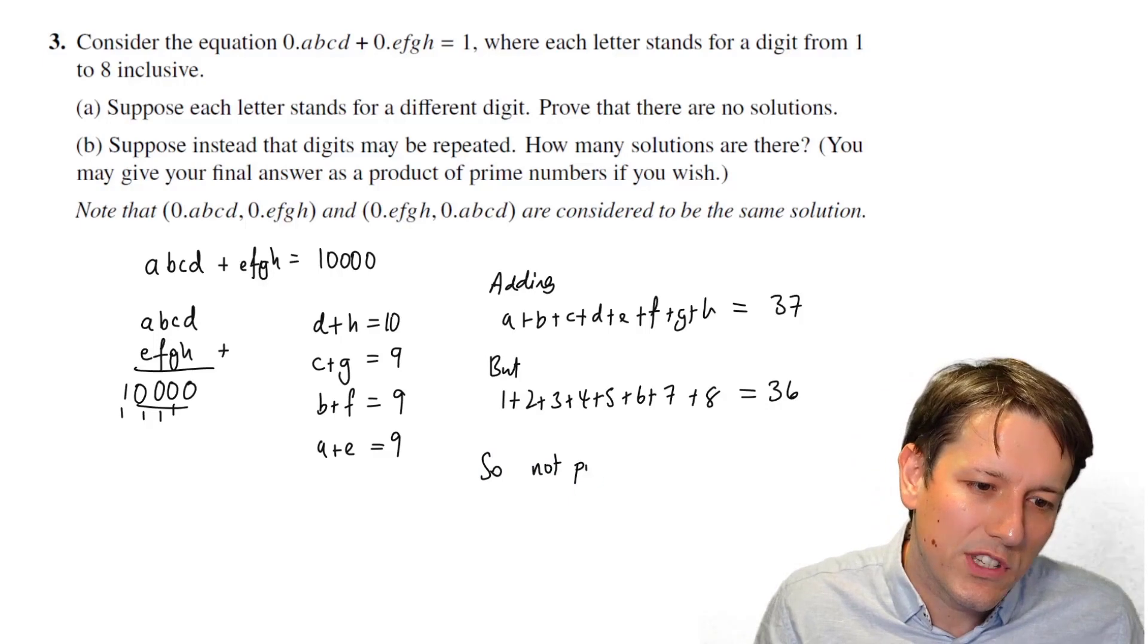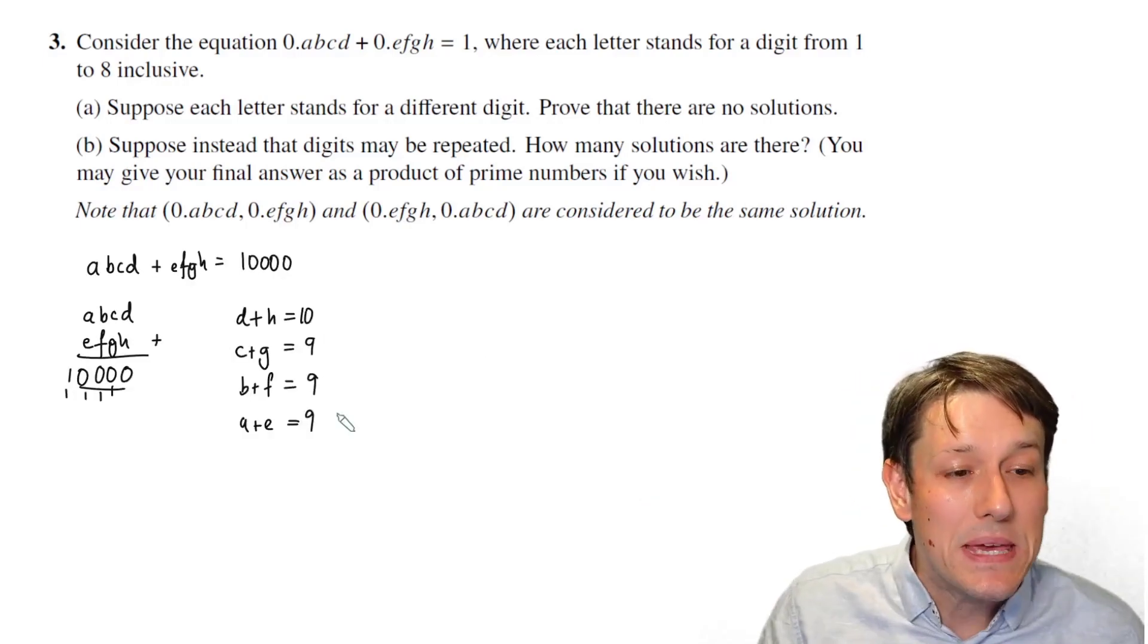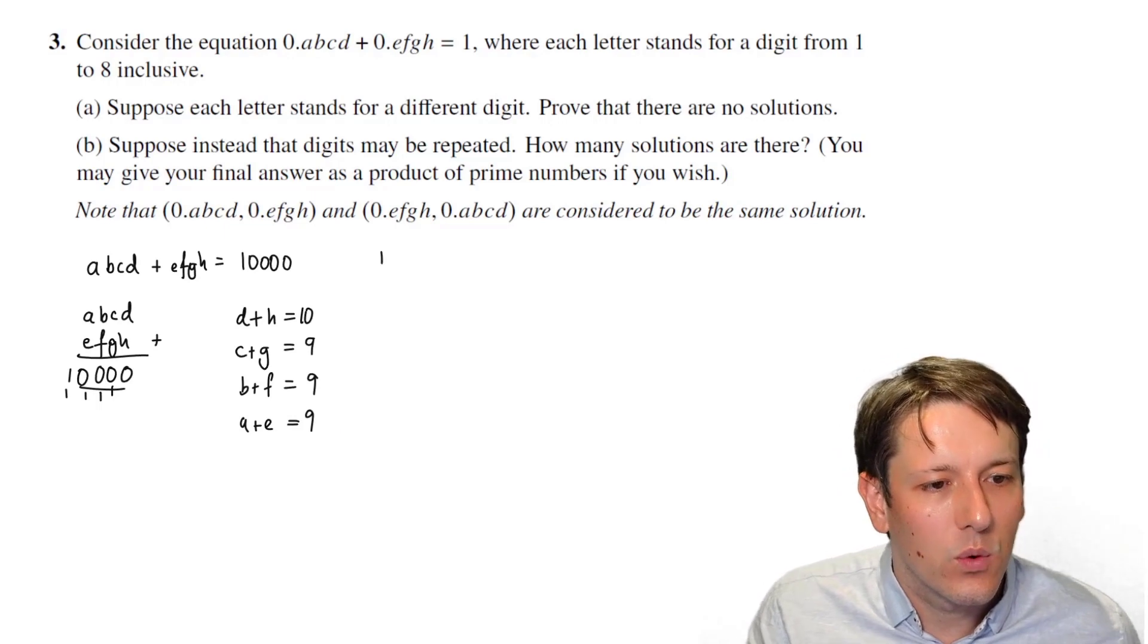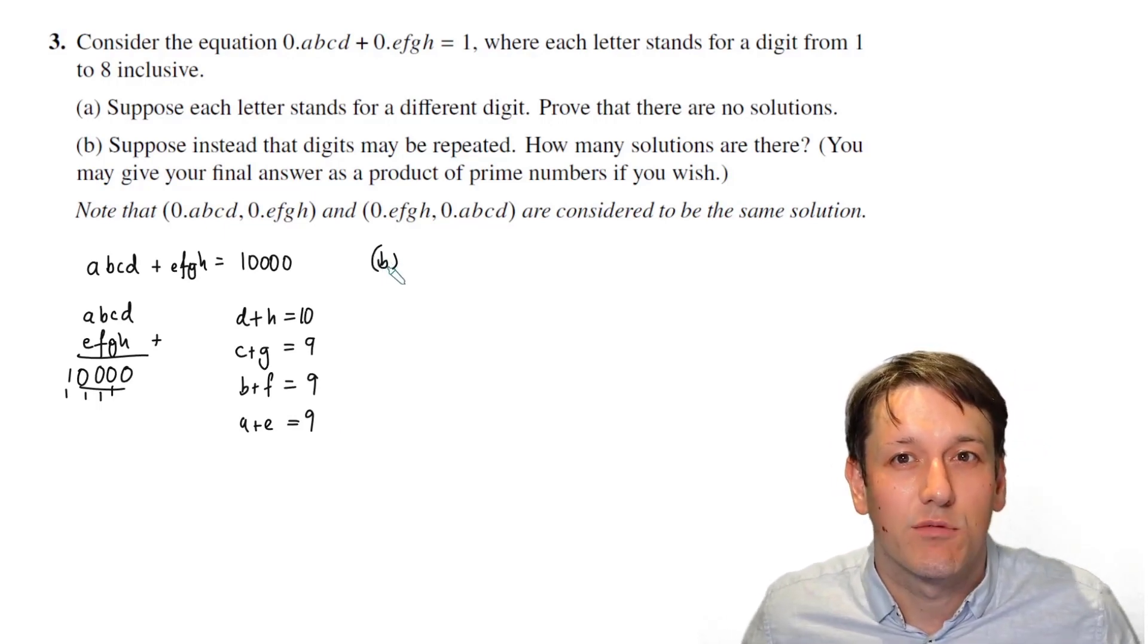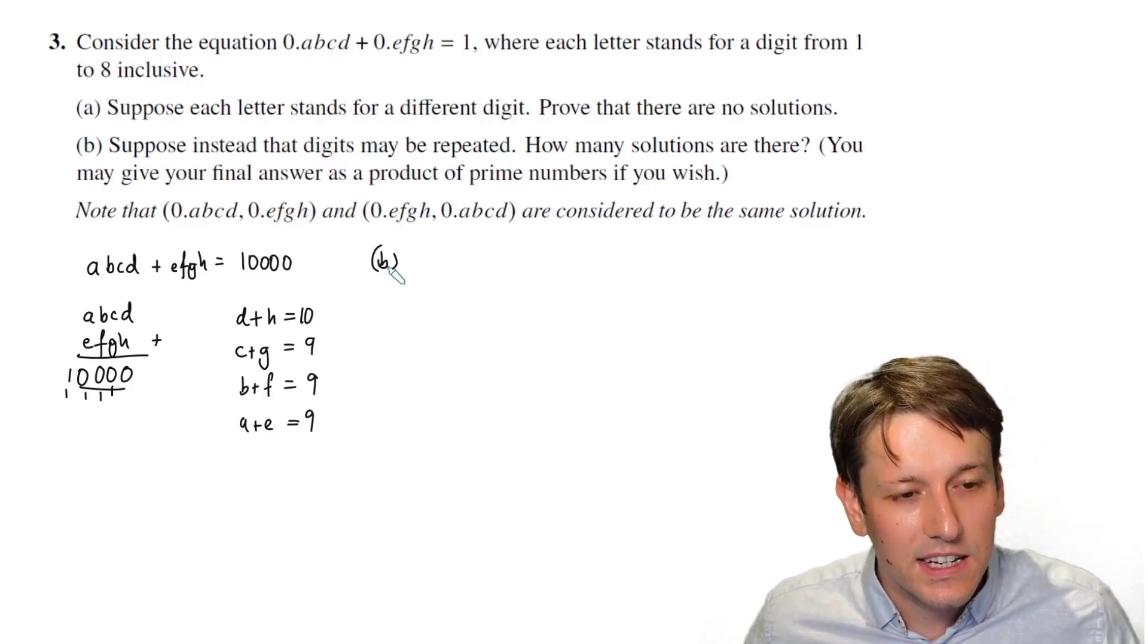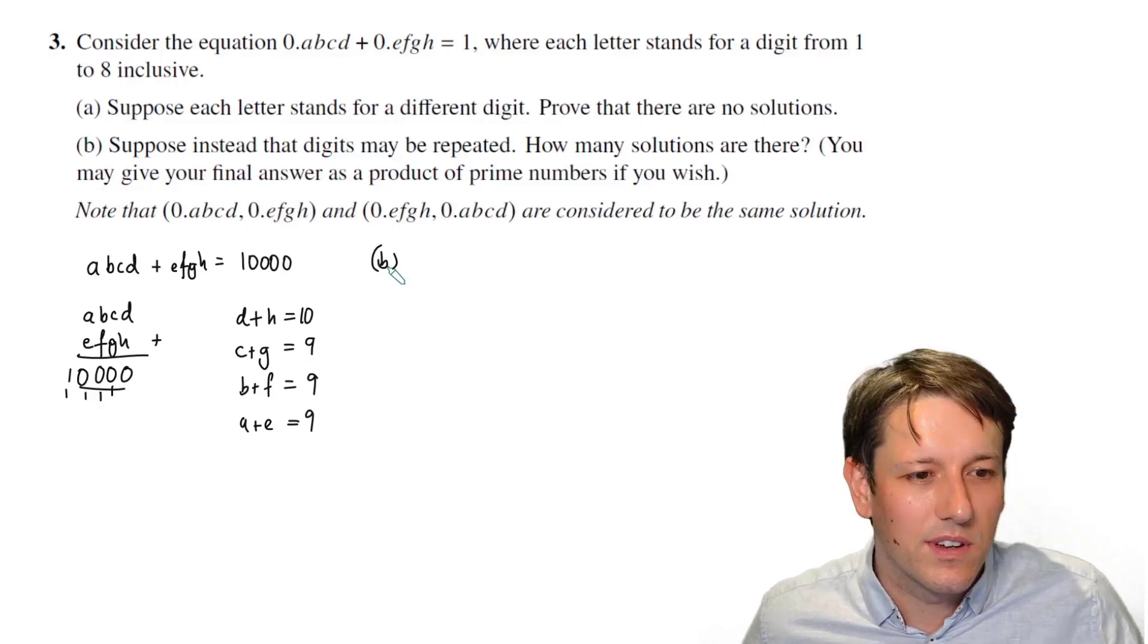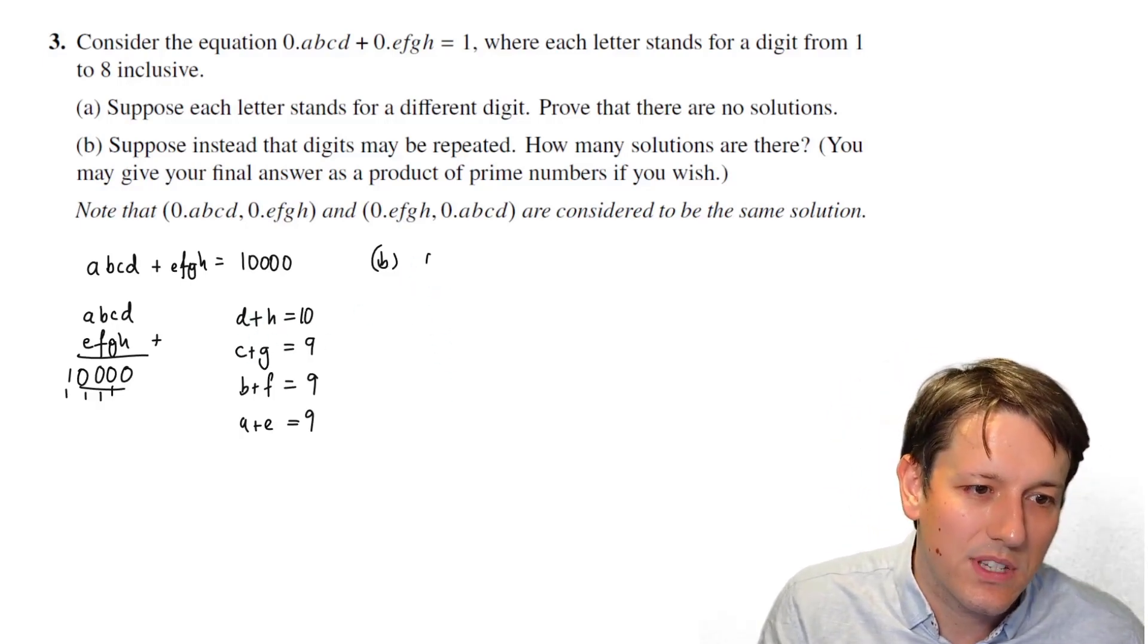So let's just say it's not possible. Again, you should use quite a few more words than I have in writing this up. Now to do part B, I'm going to keep this introductory working here, and we are going to consider the different options. So these combinatorial counting problems come up a lot in the Olympiad, and they all have slightly different twists, all variants on some key themes. But we're going to start here by looking at D plus H equals 10.